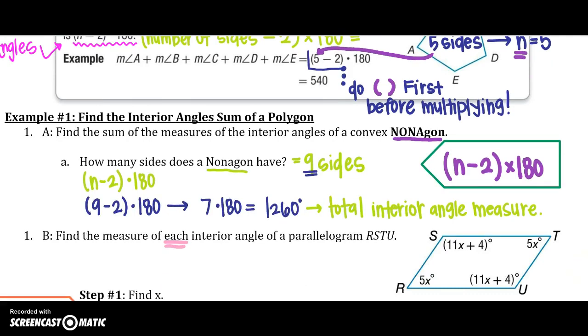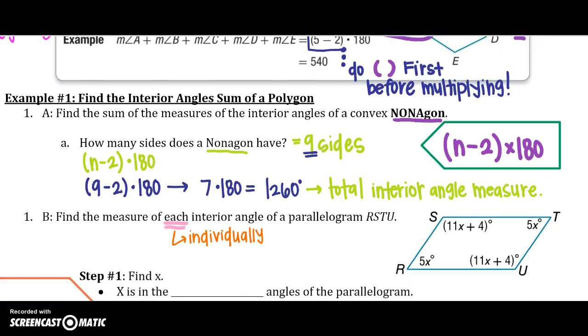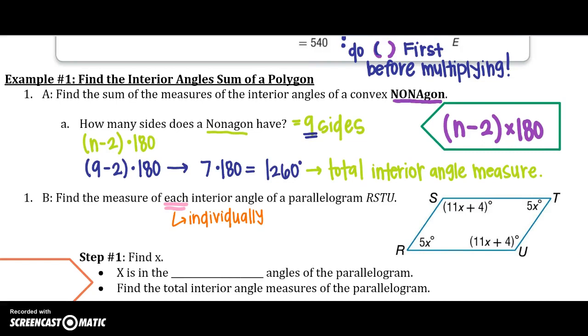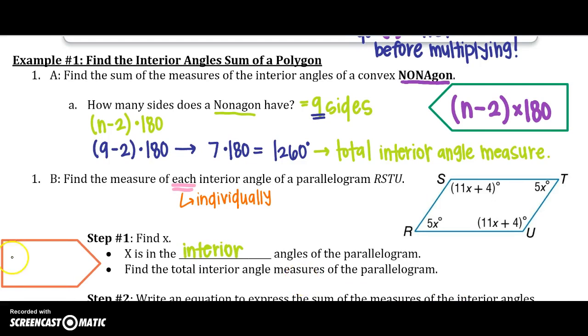The next type of example you might run into is you are asked to find the measures of each interior angle of a parallelogram. Remember that each means individually. It does not mean as a whole, so let's see the steps we need to take to do so. The first one is we need to find the value of x. And we know that x is found in the interior angles of the parallelogram. And to find the total, remember we can use our equation that we learned above. So we have n minus 2 times 180 will give us the total measures. And we need to do that first before we can start finding individual ones. So we know there's 4 sides. So we know that n equals 4. So we'll say 4 minus 2 times 180 degrees.